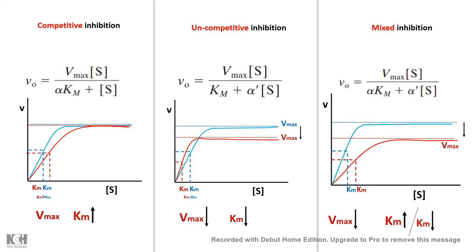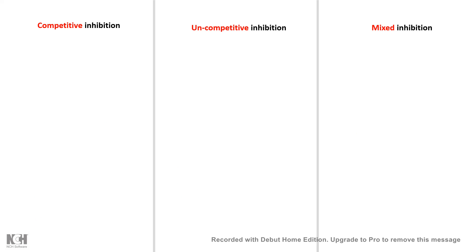In the graph shown, Km has increased, so this particular case of mixed inhibition resembles competitive inhibition more. However, note the key difference: in competitive inhibition Vmax does not decrease, whereas in mixed inhibition Vmax does decrease.